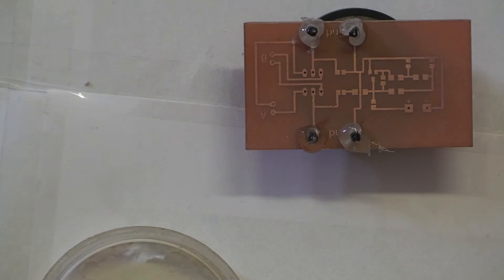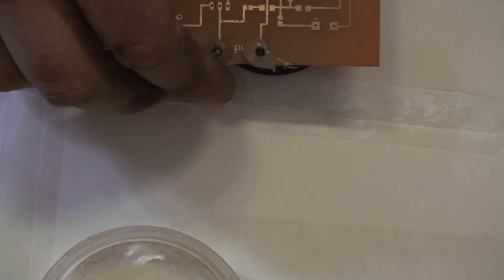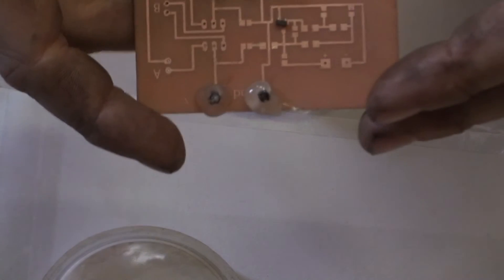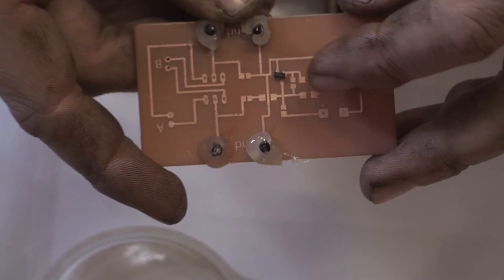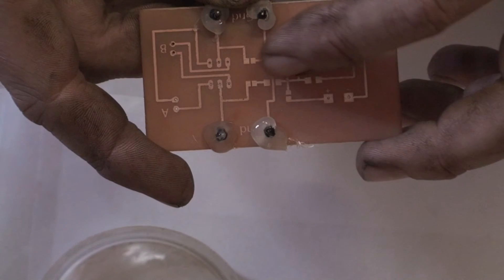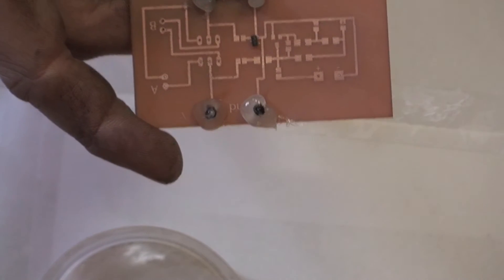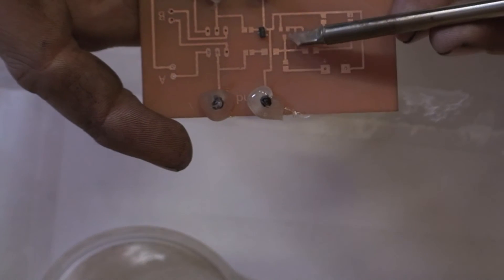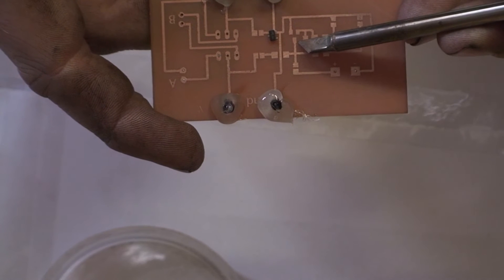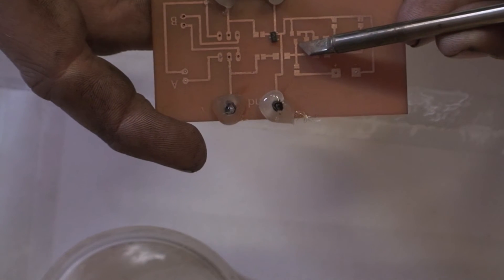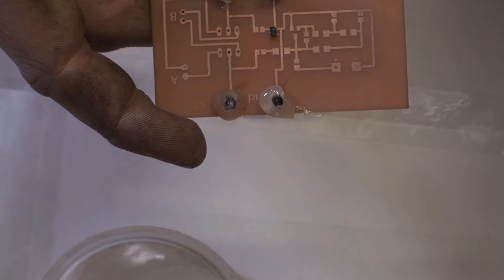So what's next to put on? Next I'm going to put on the transistor. So what I'm going to do is I'm just going to tin one of the legs first just so then it can hold itself, and then I'll solder the other two legs.